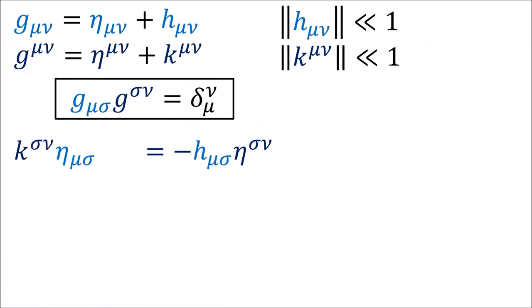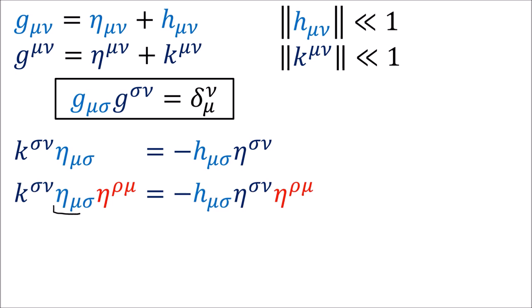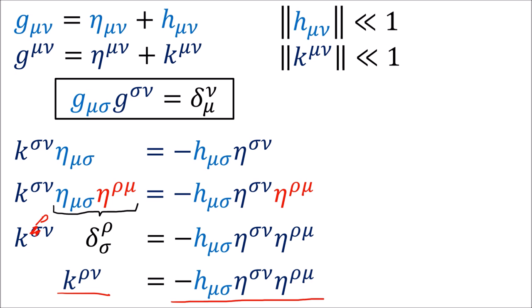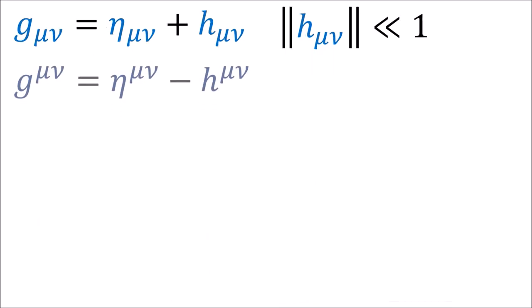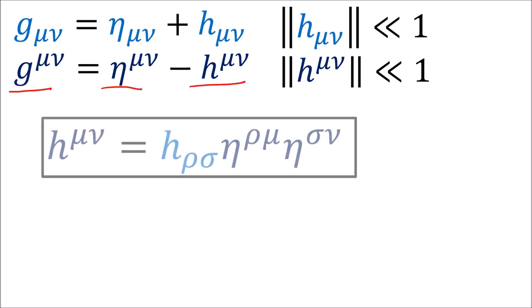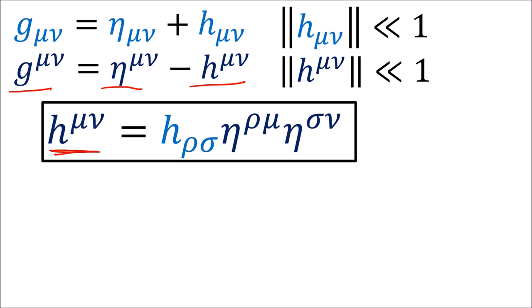If we sum both sides with eta inverse, on the left side, eta and eta inverse sum to a Kronecker delta, which changes the sigma index into a rho index. So we've solved for the k components in terms of h components: k equals negative h, with two summations with the inverse Minkowski metric. Since the metric is used to raise and lower indices, we can treat these two Minkowski metrics as raising the mu and sigma indices on h, giving us negative h with raised indices. So the inverse metric g is just the inverse Minkowski metric minus h with raised indices.